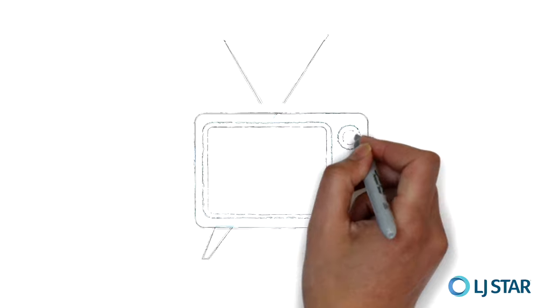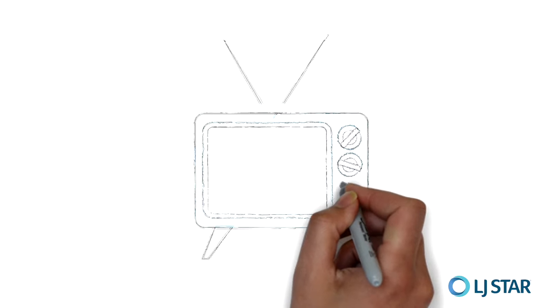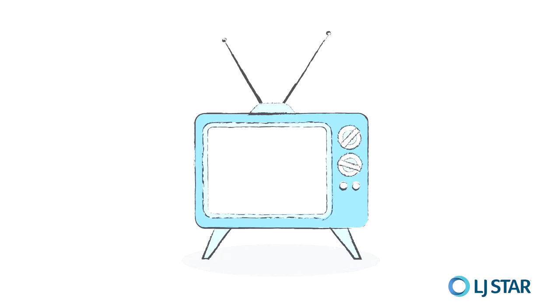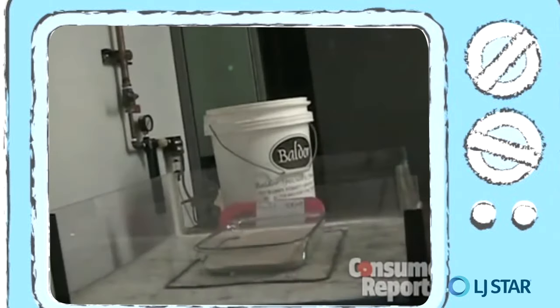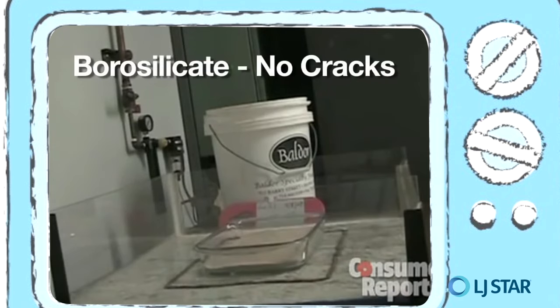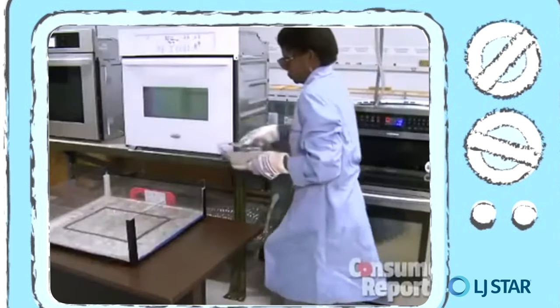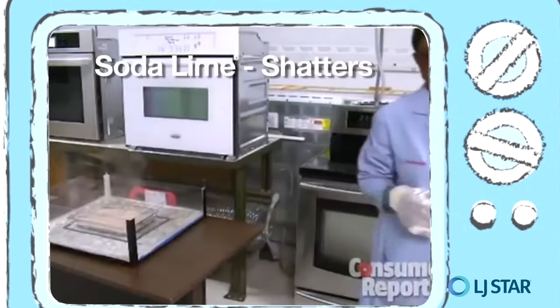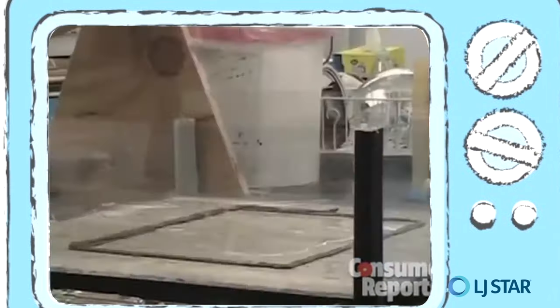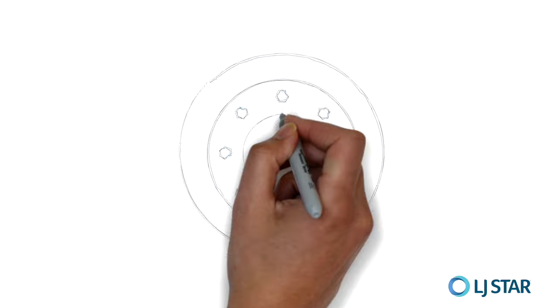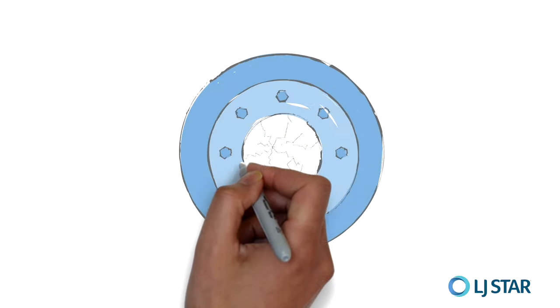What was Corning after? What was the problem placing regular glass in a high-temperature oven? I have a demo for you to explain that. In this test by Consumer Reports, a borosilicate baking dish comes out of a hot oven and is placed on a wet countertop — no cracks. When the same test is performed with a baking dish made of soda lime glass, the same conditions can occur during an external wash-down of a hot process vessel. Which kind of glass would you trust?